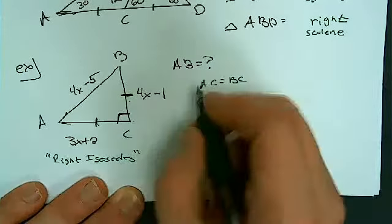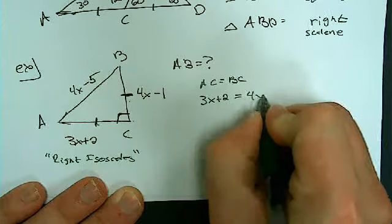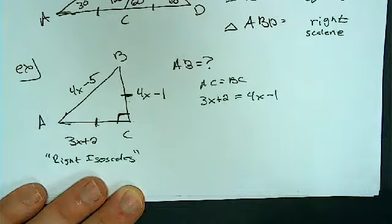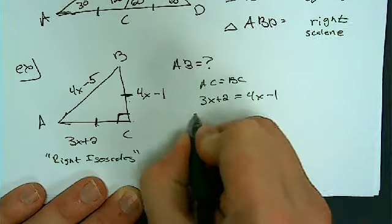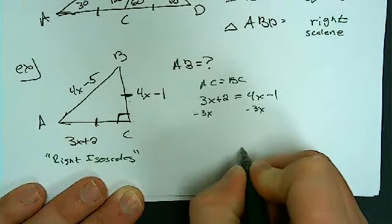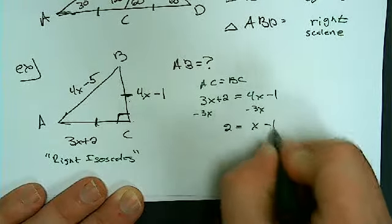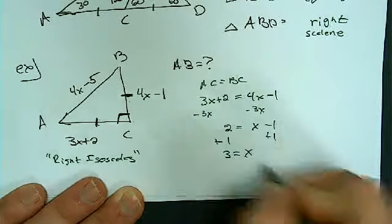So I can go ahead and write 3x plus 2 is going to equal 4x minus 1, right? Let's subtract 3x from both sides, gives me 2 is equal to x minus 1, add the 1, x equals 3.